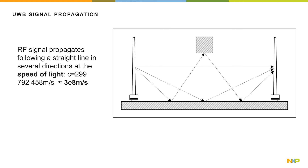As radio waves propagate in all directions, they can follow multi-paths to reach their targets. The same message will then be received multiple times with different intensity at the receiving antenna.